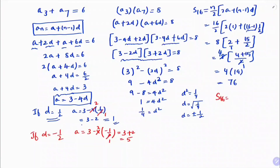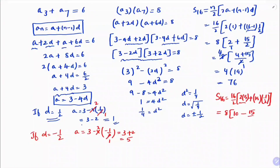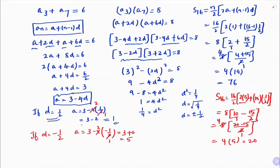Now calculating S16 with a = 5 and d = −1/2: S16 = (16/2)[2(5) + 15 × (−1/2)] = 8 × [10 − 15/2] = 8 × [(20 − 15)/2] = 8 × (5/2) = 4 × 5 = 20. So if d = −1/2, the sum of 16 terms is 20, and if d = 1/2, the sum is 76.